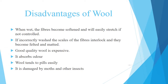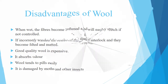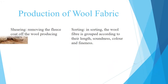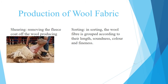Disadvantages of Wool: When wet, the fibers become softened and will easily stretch if not controlled. If incorrectly washed, the scales of the fibers interlock and they become felted and matted. Good quality wool is expensive. It absorbs odor. Wool tends to pill easily. It is damaged by moths and other insects.